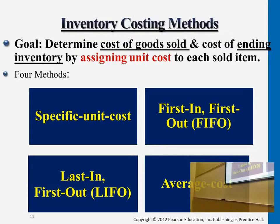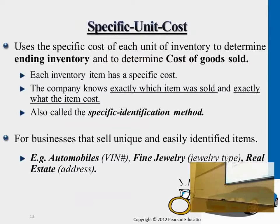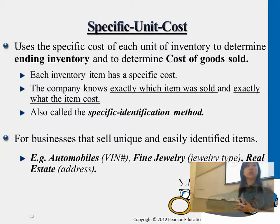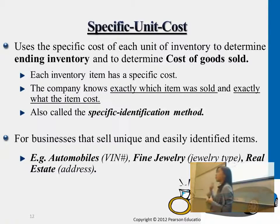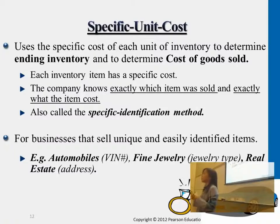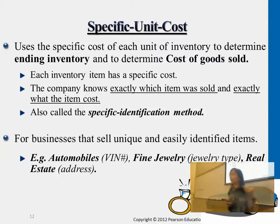Let's look at each method in more detail. The first one is specific unit cost. This method basically represents that for each and every item you're selling to a customer, we actually keep track of its original purchase batch. This is what we call specific unit cost.